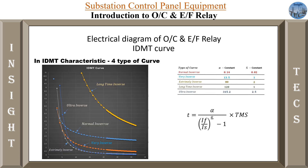Now let us see the different kinds of curves for all these different constant values. If we change the value of the constants, the curve will be different. For normal inverse, we have seen the curve. For very inverse, this is the orange curve. For the extremely inverse case, you can see the gray curve. For long time inverse, a completely different curve characteristic shown in yellow. And ultra inverse you can see here. Based on different kinds of application, you can choose different kinds of values, but in general we use the normal inverse curve characteristics.